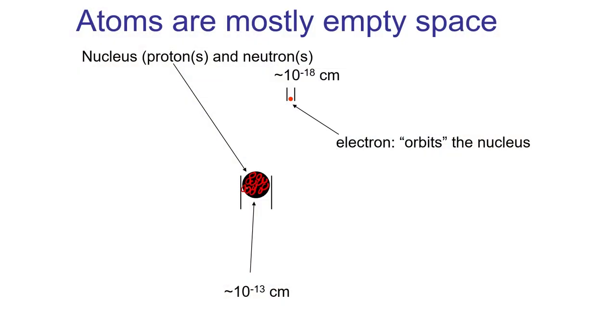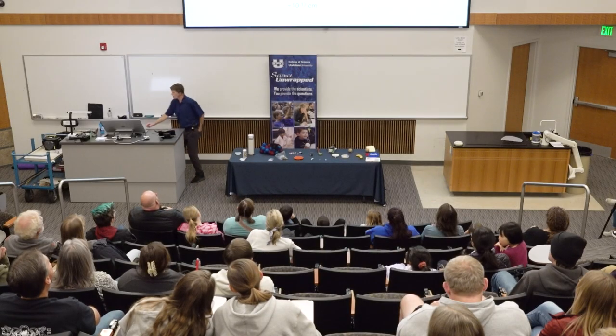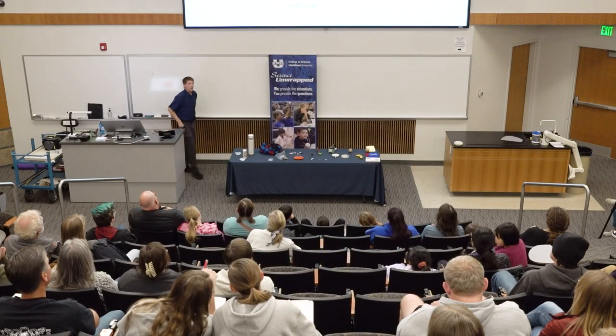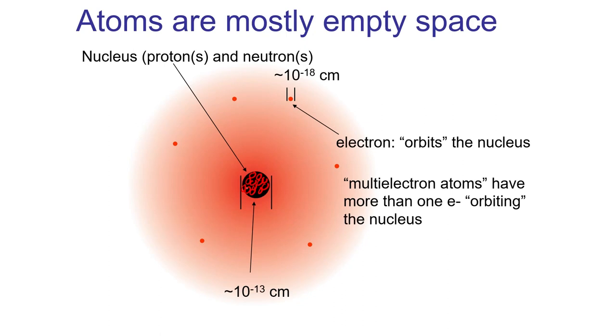Now, if the simplest atom, hydrogen, has one electron, atoms larger than hydrogen have multiple numbers of electrons that are spinning around. And so these electrons assume all kinds of positions in space. And so if we draw a boundary around the space where we find the electrons, that becomes what we call the size of the atom. Now, atoms are incredibly small.